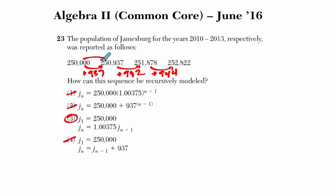And if you divide subsequent terms, you get about each time about 1.00375. Each time, you're going to get that.